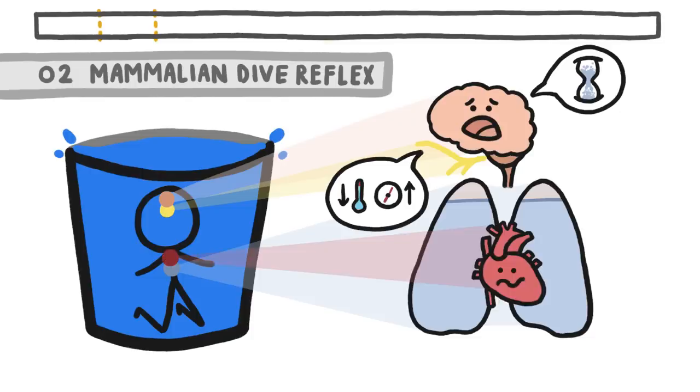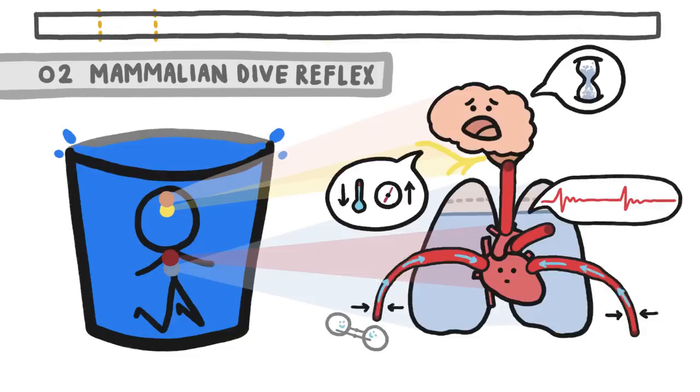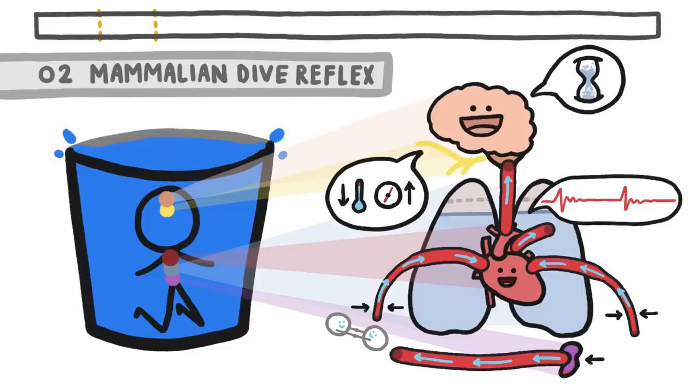Our brain tells our heart to slow way down, which slows down the rate at which we use oxygen. Then, the blood vessels on our skin and in our limbs constrict, directing more of the blood flow, which contains oxygen, toward our brain and other vital organs. Finally, our spleen, which serves as a blood reservoir, contracts, sending out a bunch of backup oxygen-rich red blood cells into our bloodstream.